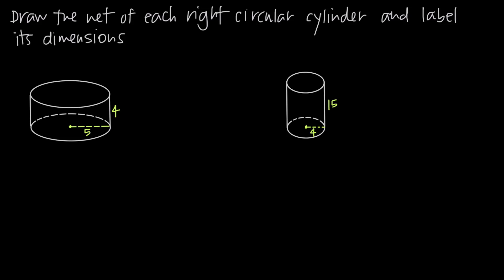In this video, we're talking about how to draw the net of a right circular cylinder. We're also going to label the dimensions of the net once we've drawn it. Remember that a net of a three-dimensional figure is basically just the shape of the piece of paper that you would have to fold up to create the three-dimensional object. We're basically going to transform the three-dimensional object into a two-dimensional shape, and that two-dimensional shape will be the net of this three-dimensional object.